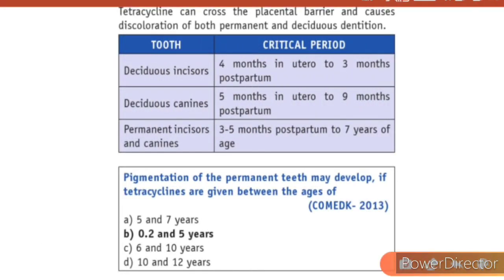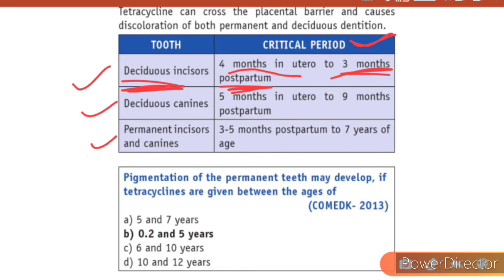If tetracycline stains are found in the deciduous incisors, the critical period is four months in utero to three months postpartum. For deciduous canines, it is five months in utero to nine months postpartum. For permanent incisors and canines, the critical period for tetracycline staining is three to five months postpartum to seven years of age. Tetration of the permanent teeth may develop if tetracyclines are given between the ages of 0.2 and five years.